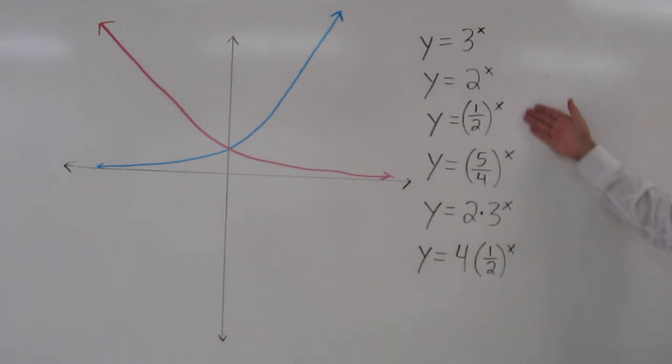Now here's a bunch of functions, and there's a trick to figure out if it's exponential growth or decay. The trick is, look at the value that has the x exponent. So 3 to the x power, 2 to the x power, 1 half to the x power. This value is called the base, or b.